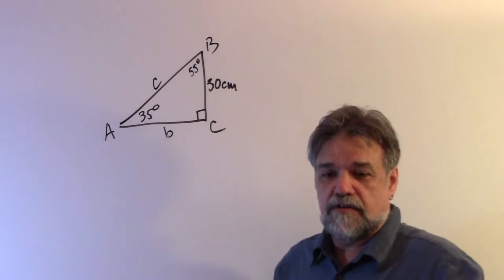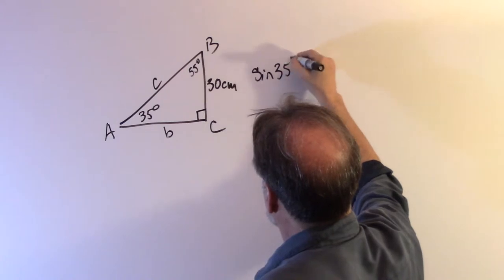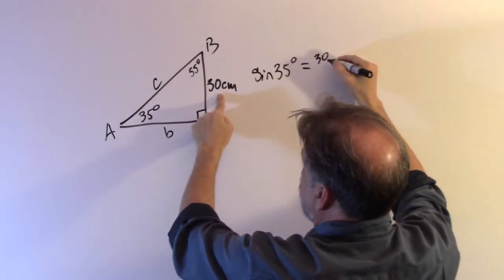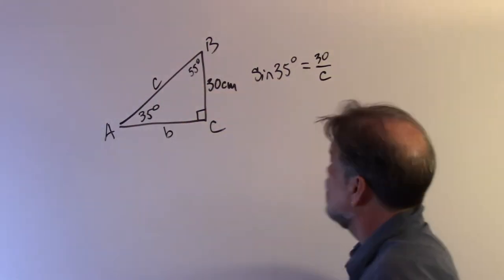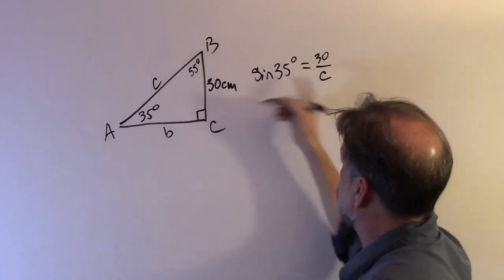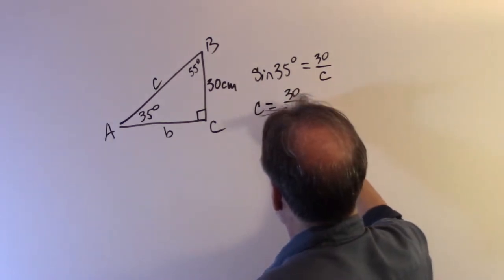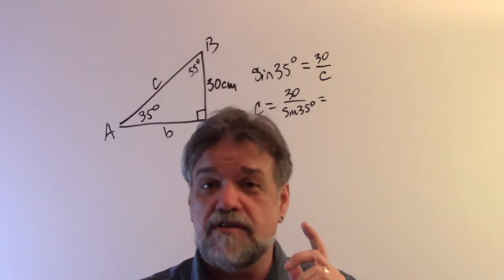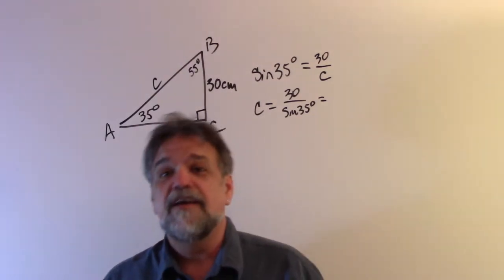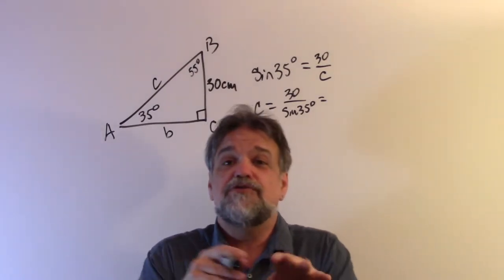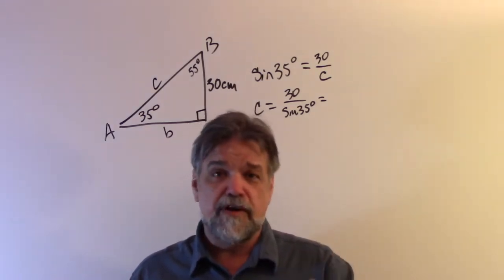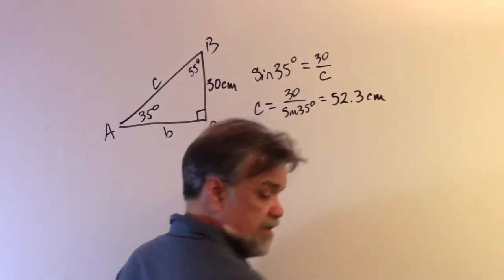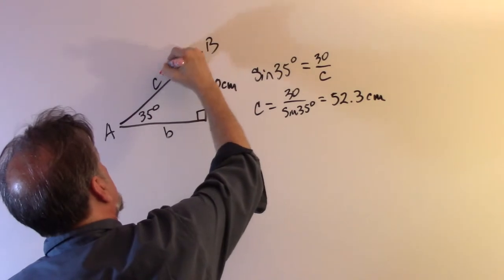Let's use trigonometry. The sine of 35 degrees is going to be — angle A is 35 degrees — 30 centimeters divided by c, which is the hypotenuse. So I multiply both sides by c, divide both sides by sine of 35, and I get c equals 30 divided by sine of 35. Using my calculator, I get approximately 52.3 centimeters. So c is 52.3 cm.